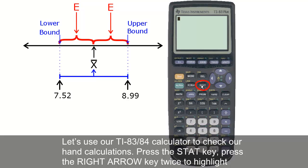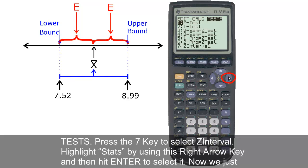Press the STAT key. Press the right arrow key twice to highlight TESTS. Press the 7 key to select Z interval.